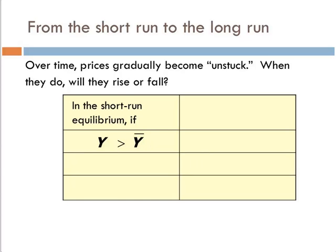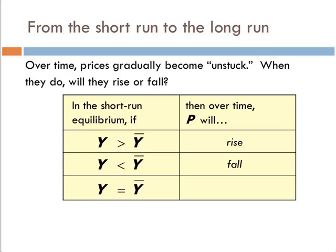How does that work? If the short run equilibrium Y is greater than the natural rate of output, prices rise over time and the short run equilibrium eventually falls down to a point equal to the long run natural rate of output. What if the short run equilibrium is below the natural rate? Prices fall and the opposite happens — output eventually climbs until it equals the natural rate. If they're equal, there's no force pushing price level up or down. Price level is what links us from the short run to the long run as prices gradually get unstuck.